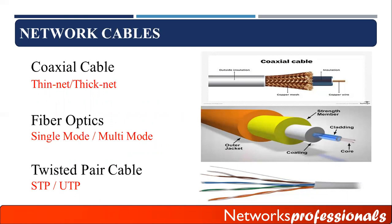Nowadays our network minimum speed is 100 Mbps, so most organizations don't use coaxial cable. Coaxial cable has two types: Thinnet and Thicknet. Thinnet stands for 10Base2 — you can cover 200 meters at 10 Mbps. Thicknet stands for 10Base5 — your speed is still 10 Mbps but you can cover up to 500 meters distance.